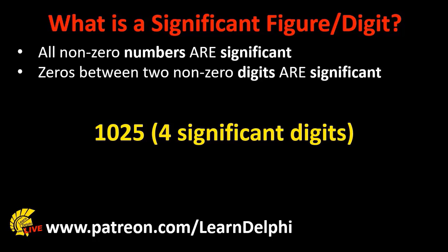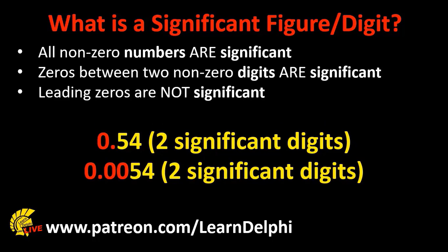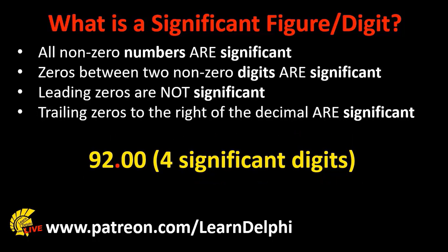Secondly, if a number has a zero between two non-zero digits, then the zero is also significant. For example, the number 1025 has 4 significant digits, so the zero is also counted as a significant digit. But leading zeros in a floating point number are not significant. For example, the number 0.54 only has 2 significant digits, and the number 0.0054 also only has 2 significant digits.